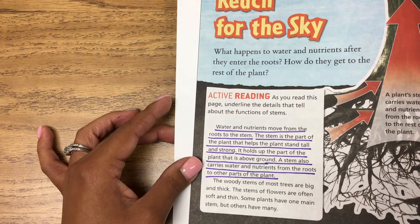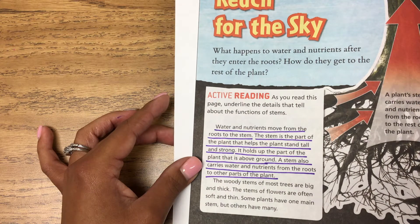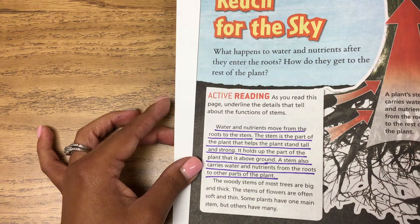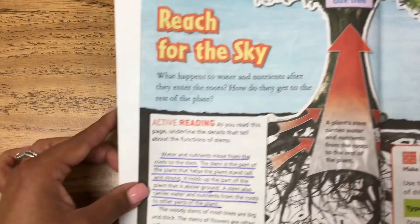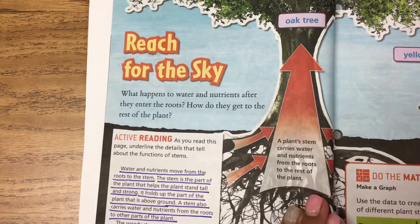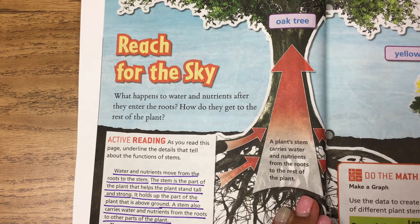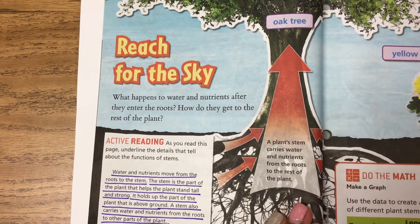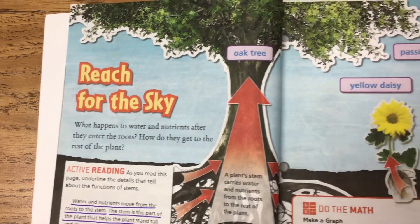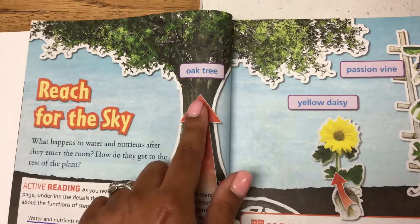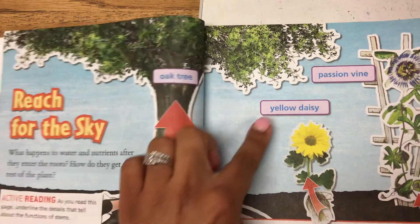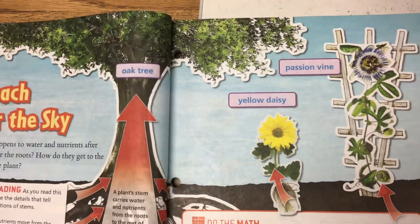The woody stems of most trees are big and thick. The stems of flowers are often soft and thin. Some plants have one main stem, but others have many. The caption shows that a plant's stem carries water and nutrients from the roots to the rest of the plant. You can see here an oak tree, a yellow daisy, and a passion vine.